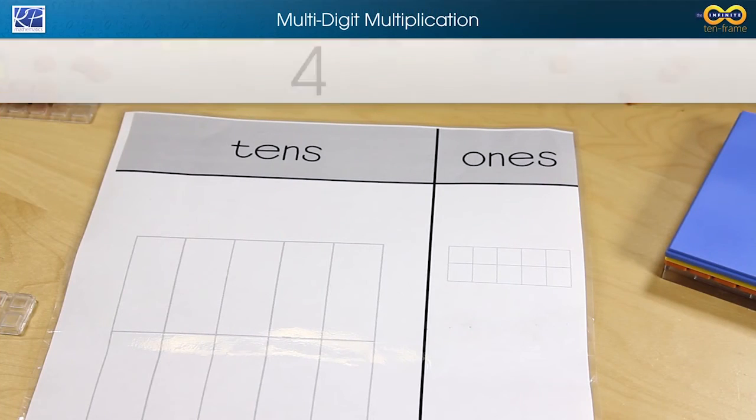Hi, I'm Kim, and in this video I'm going to show you how to use KP10 frame tiles to demonstrate multi-digit multiplication. Let's take a look at 4 times 23.